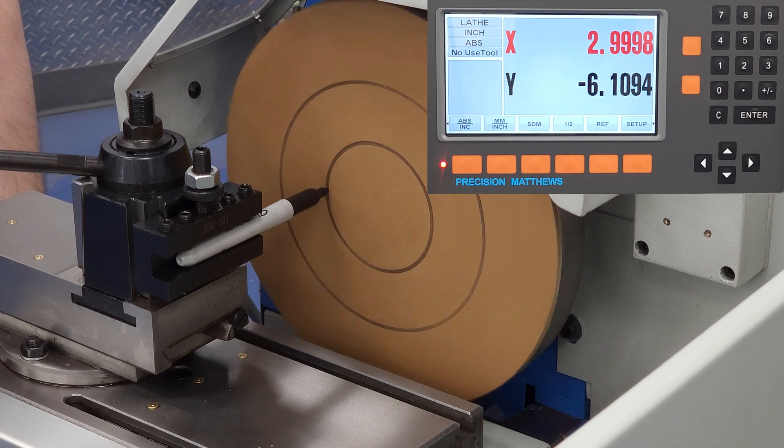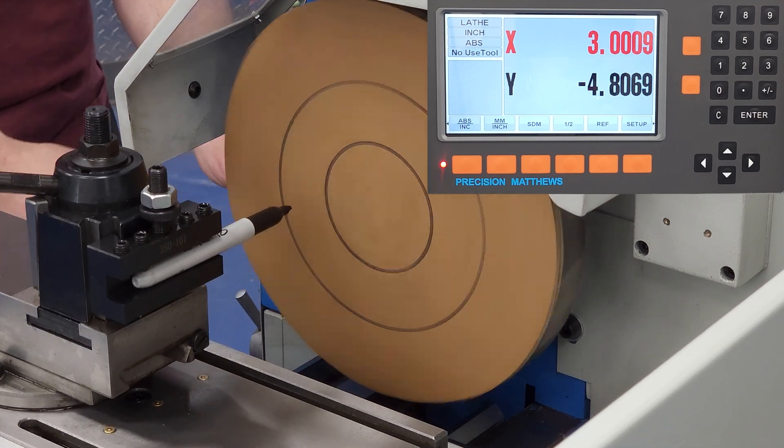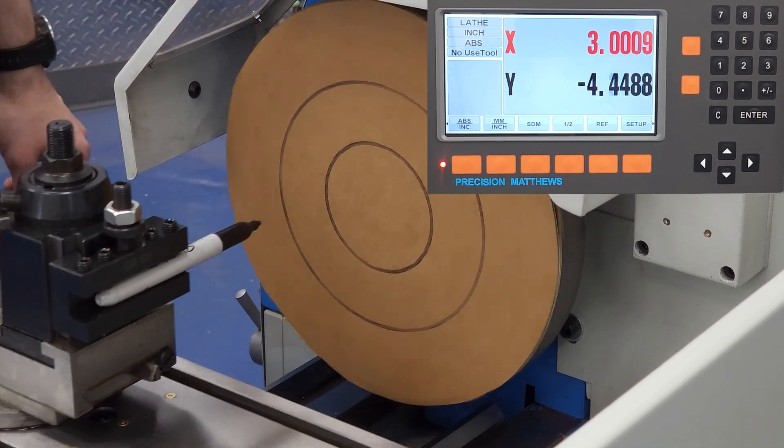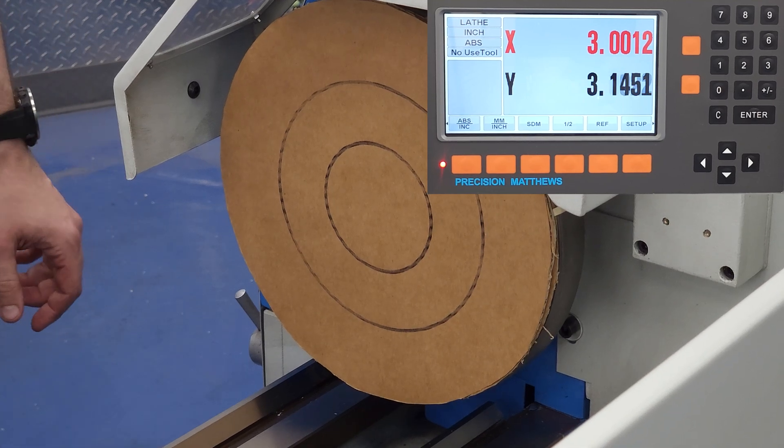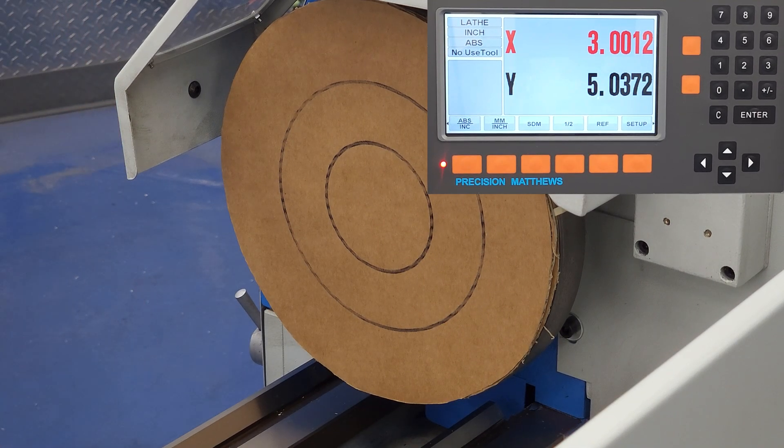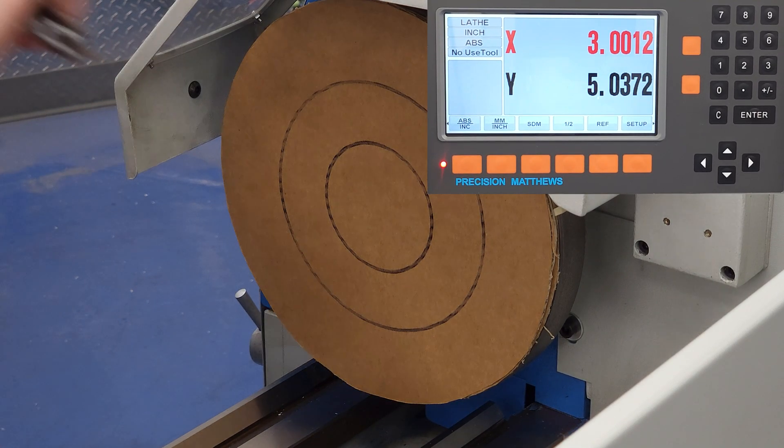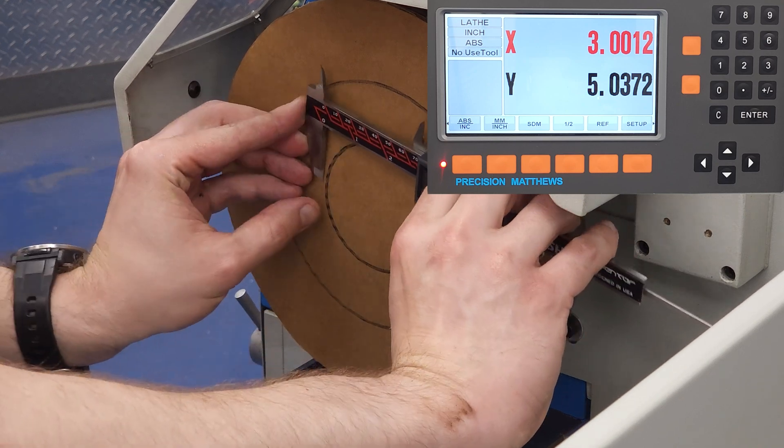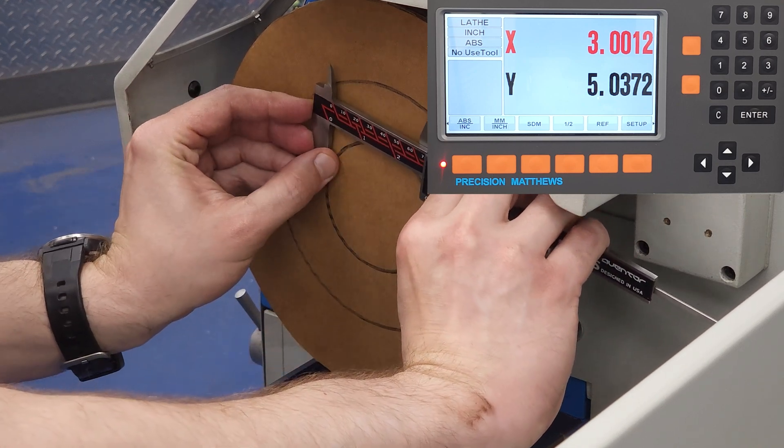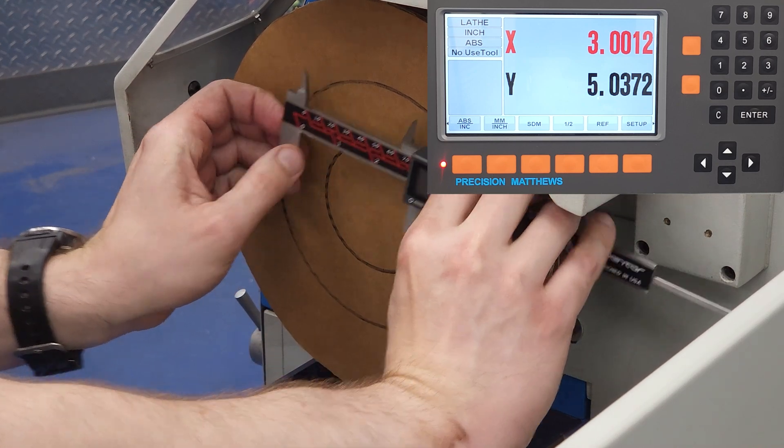That's the beauty of diameter mode. You just measure what you have, enter that value into the DRO, and move until the DRO says the measurement that you want. Sanity check here with the calipers, and the diameter is indeed three inches, at least within the precision allowed by the Sharpie marker.